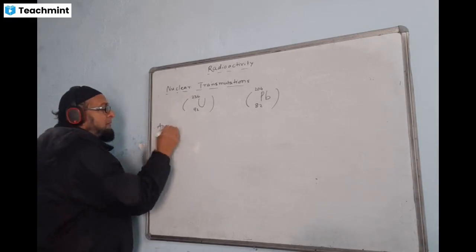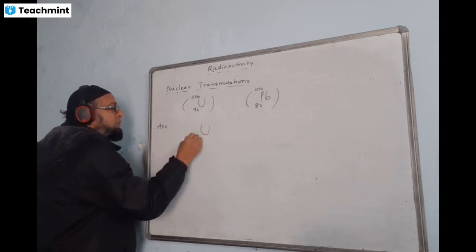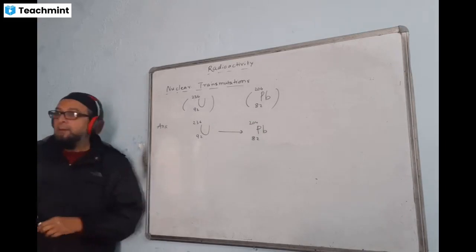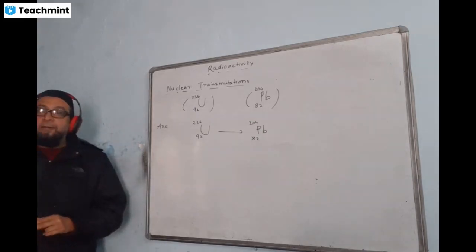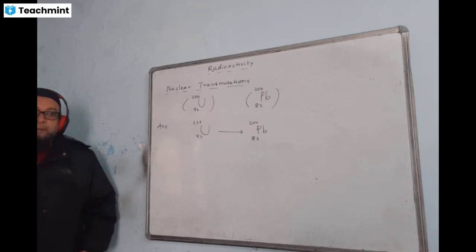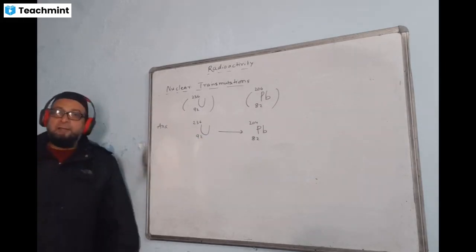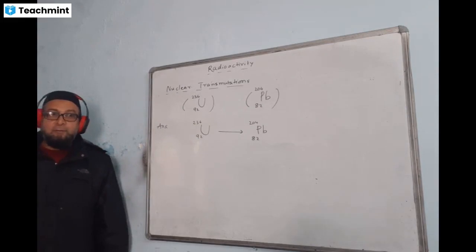It is given as 92, 236 changing into lead 82, 204. Tell me the number of particles emitted. If you think of 92 minus 82, the difference is 10, so 5 alpha. But it is not matching. This is not matching because 5 into 4 is about 20.